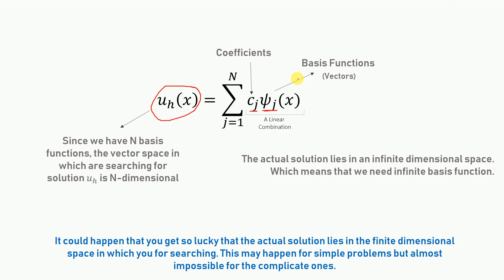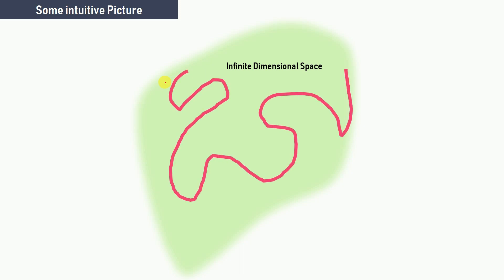The c_j coefficients are what we want to find so that u_h is closer to the actual solution — we'll discuss how to calculate them in the next module. The actual solution lies in an infinite-dimensional space, and we are searching in a finite n-dimensional space. It might be possible that the search space is the same as where the solution actually lies — in that case you get the exact solution — but for complicated domains, this is almost impossible.